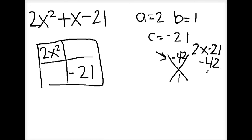So we need to look for factors that multiply to 42 and add up to 1. 7 and negative 6 multiply to negative 42, and if you add them together, it equals 1.